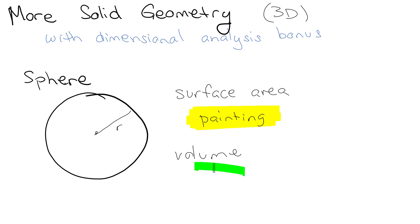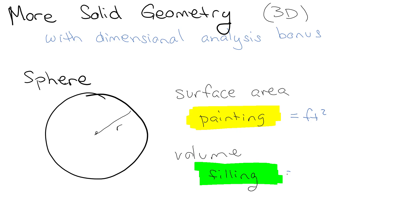Volume is the idea of filling. So if I'm going to be painting something, I'm thinking 30 square feet of paint would cover this sphere. But if I'm going to be filling it, I need something in cubic feet — cubic feet of air, cubic feet of water, or something along those lines. So we're looking for cubic feet — dimensions that are cubed in a volume, and dimensions that are squared in a surface area.